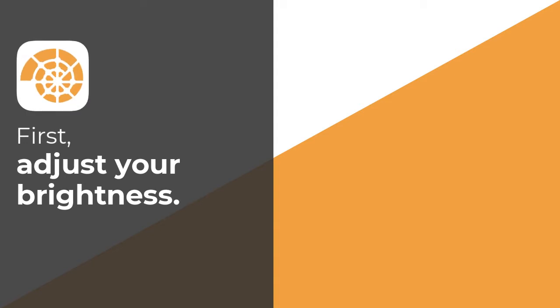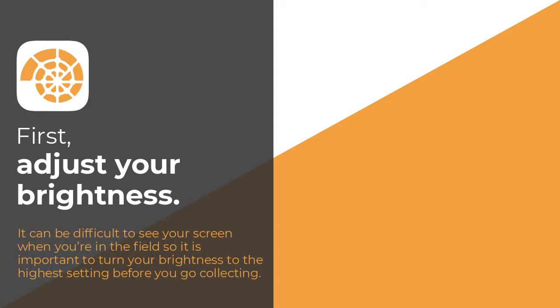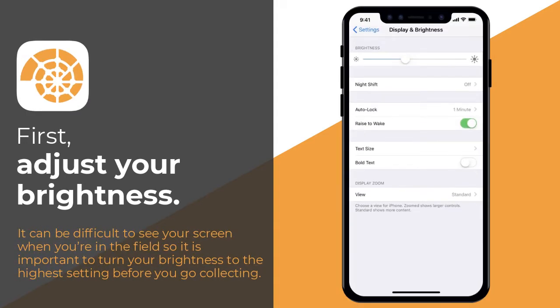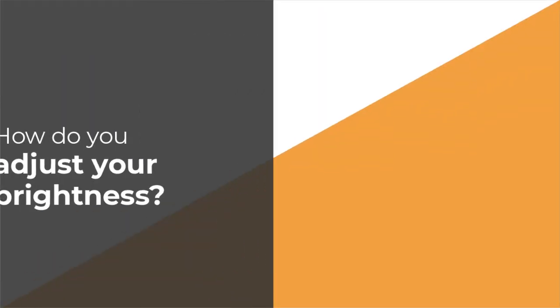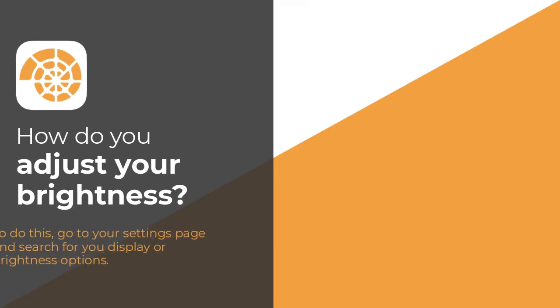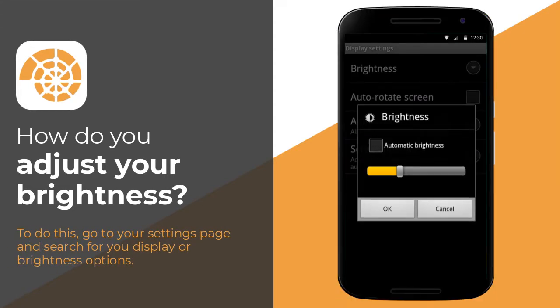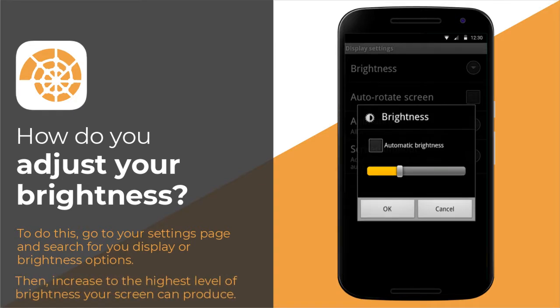First, adjust your brightness. It can be difficult to see your screen when you're in the field, so it is important to turn your brightness to the highest setting before you go collecting. To do this, go to your settings page and search for your display or brightness options. Then increase to the highest level of brightness your screen can produce.